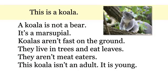Here is some information about a koala that has all three kinds of negative sentences — look for them as we read. This is a koala. A koala is not a bear — it's a marsupial. Koalas aren't fast on the ground; they live in trees and eat leaves. They aren't meat eaters. This koala isn't an adult — it is young.